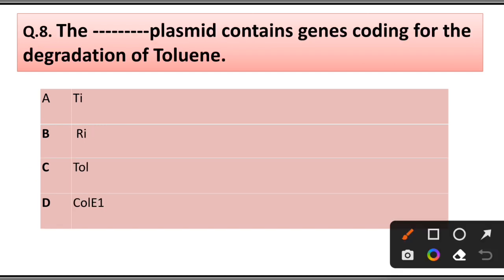Question number 8: This plasmid contains genes coding for the degradation of toluene: A) Ti, B) Ri, C) TOL, D) ColE1. Answer is option C, TOL.